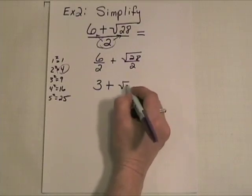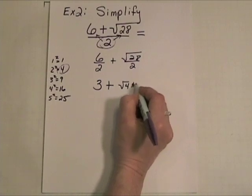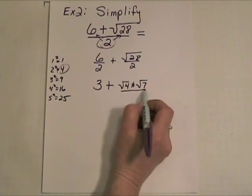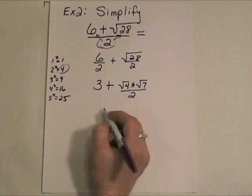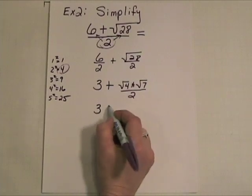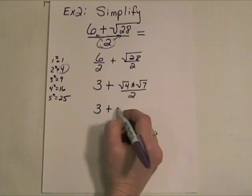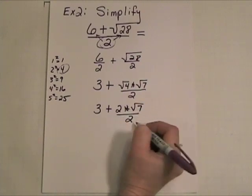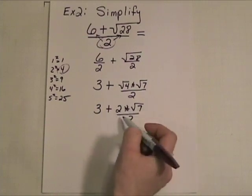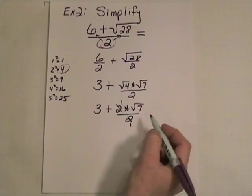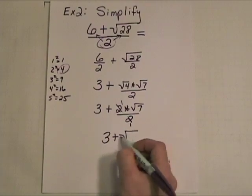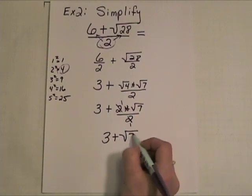It would be, the square root of 28 can be written as the square root of 4 times the square root of 7, because 4 times 7 is 28. And then, of course, that is divided by 2. So, we're going to then have 3 plus the square root of 4 is 2 times the square root of 7 all over 2. Now, look at this. 2 divided by 2 is 1. And 1 times the square root of 7 is the square root of 7. So, this simplifies to 3 plus the square root of 7.